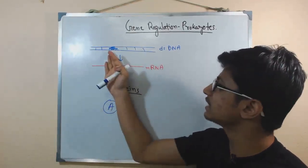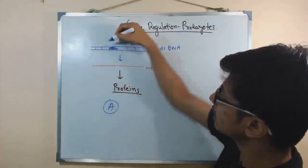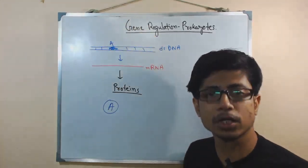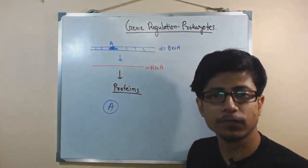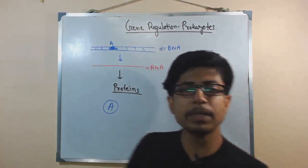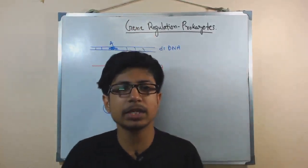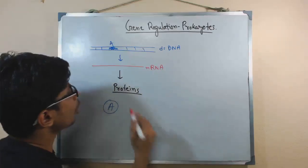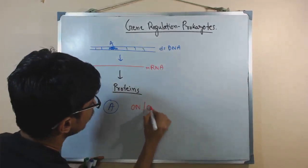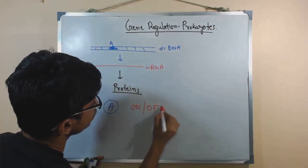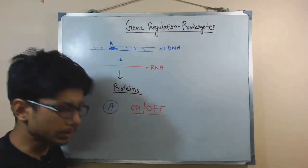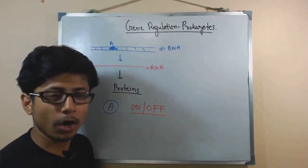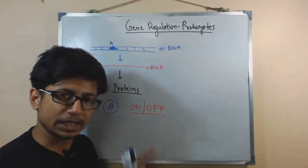On the other hand, when there is no lactose present, the bacteria will not produce the protein A gene product, because there is nothing to break down. The expression of gene A will be blocked — turned off. The idea behind gene regulation in prokaryotes is a simple on/off switch: either the gene is on or off.